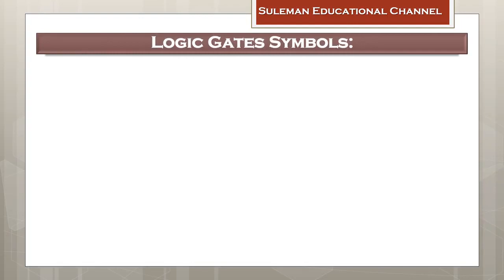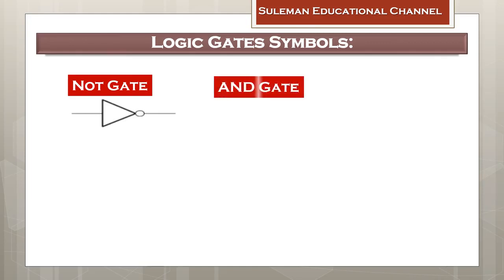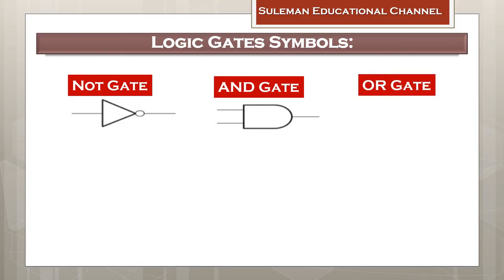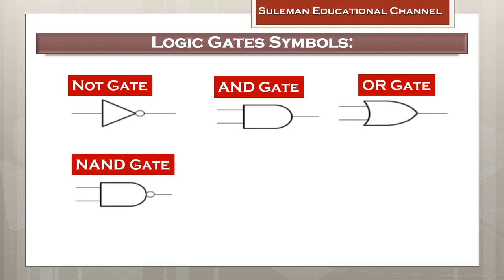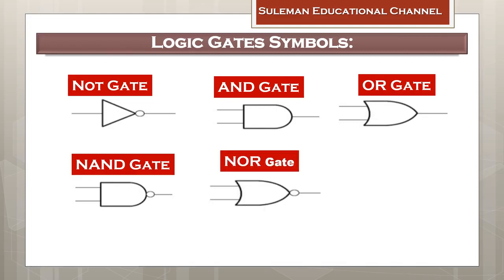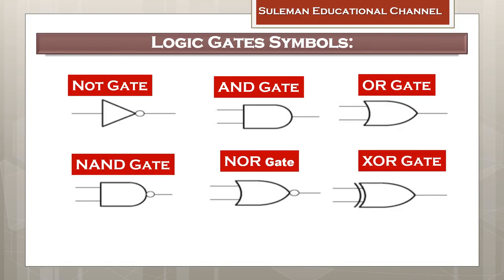Now let us discuss about the types of logic gates along with their symbols. There are six types of logic gates. The first type is the NOT gate. The second type is the AND gate. The third type is the OR gate. The fourth type is the NAND gate. The fifth type is the NOR gate. The sixth type is the XOR gate. Keep in mind that the XOR gate is also called the exclusive OR gate.